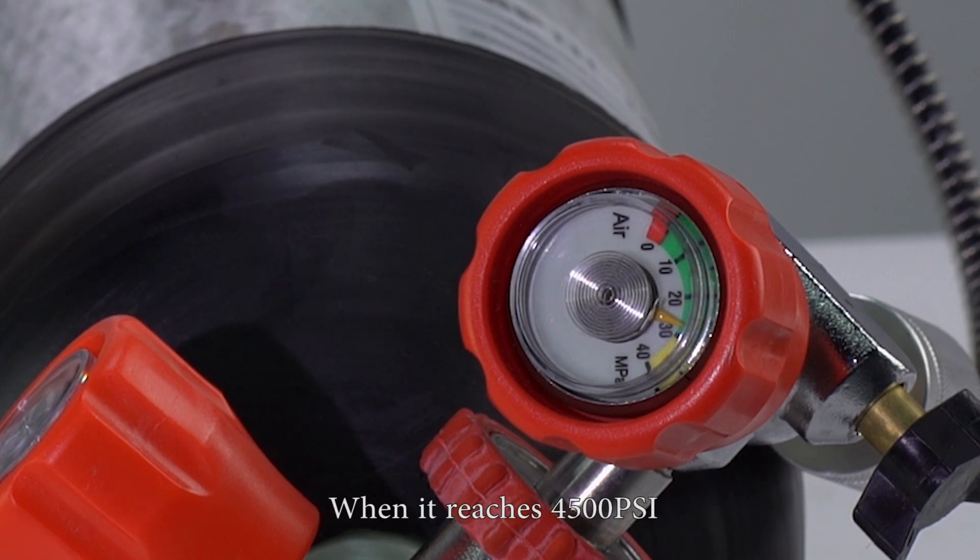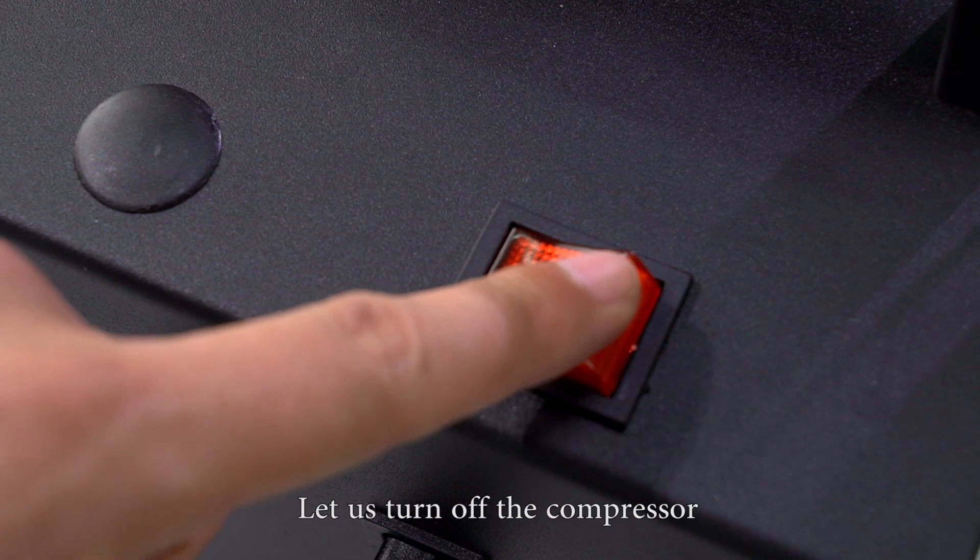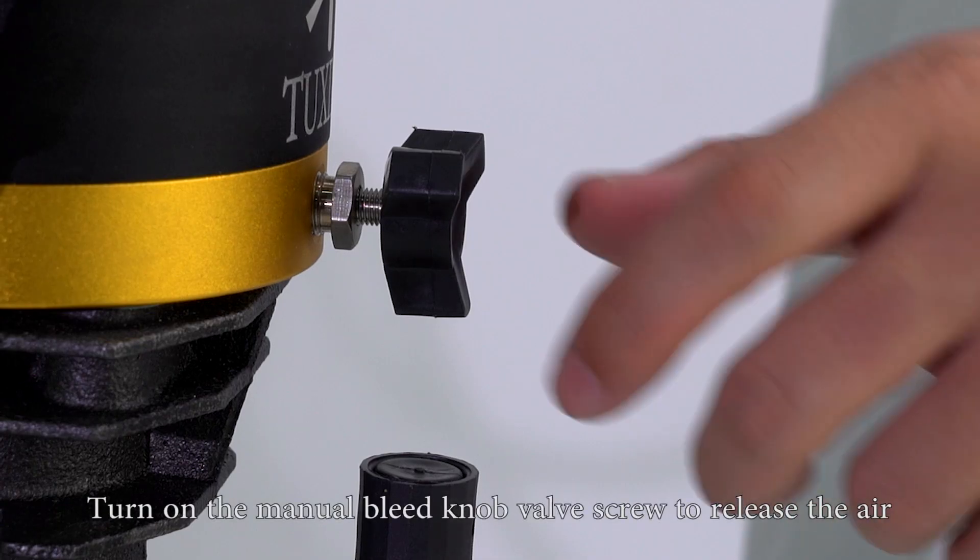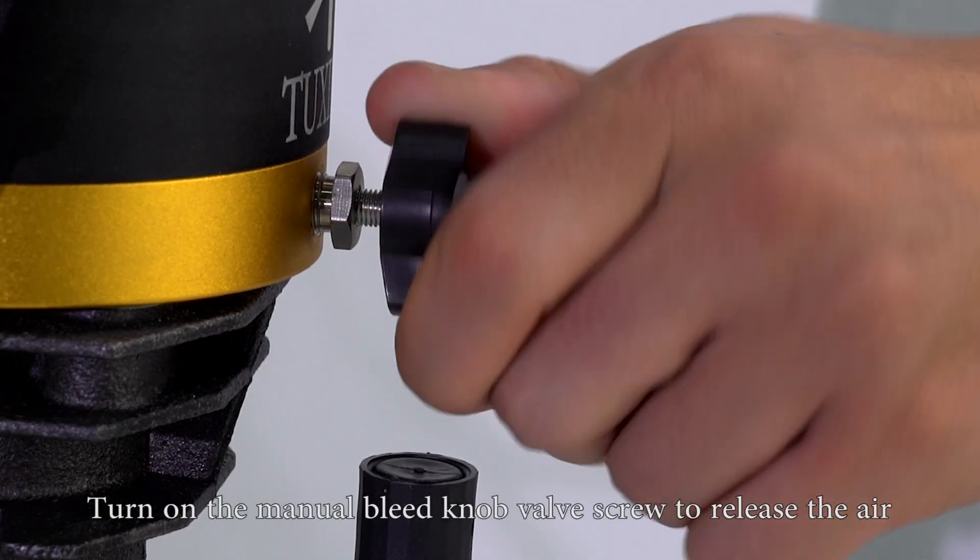When it reaches 4500 psi, let us turn off the compressor. Turn on the manual bleed nut valve screw to release the air.